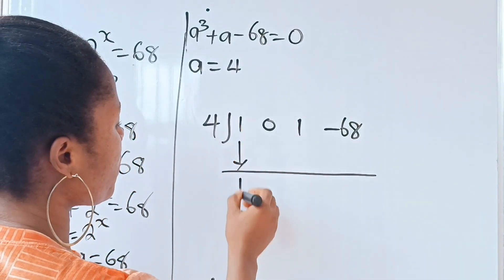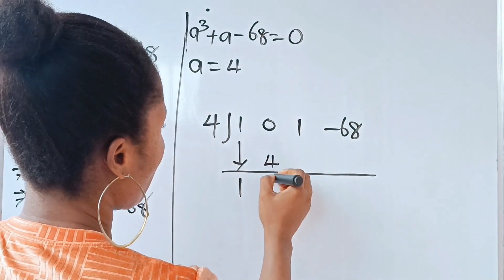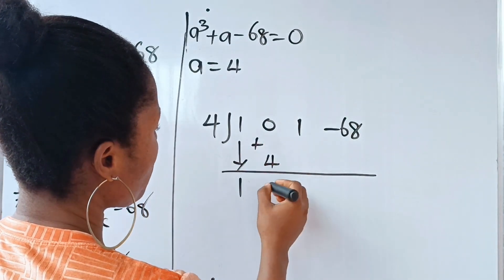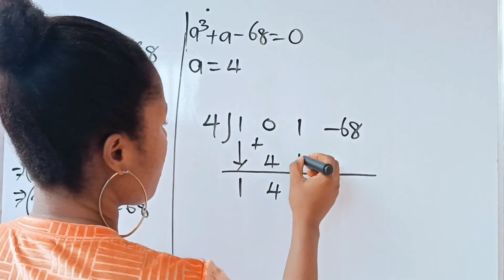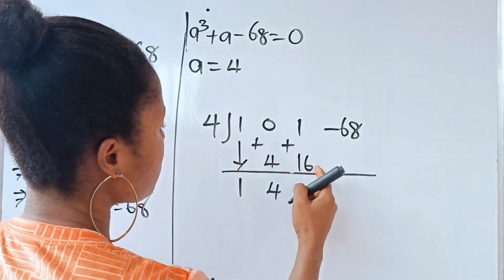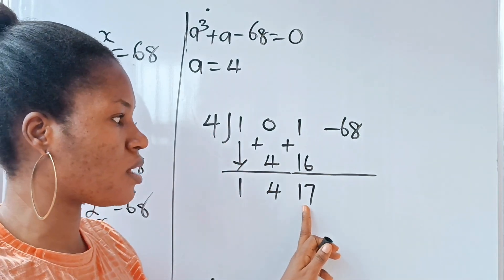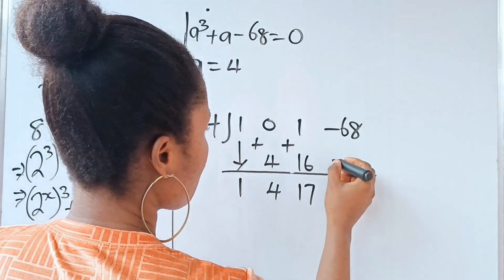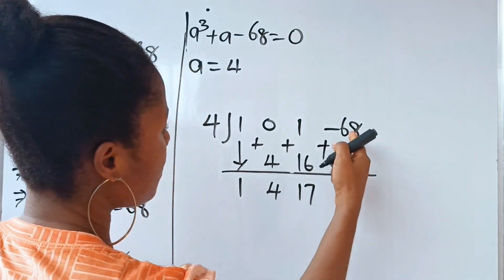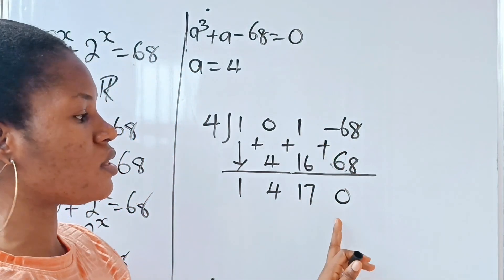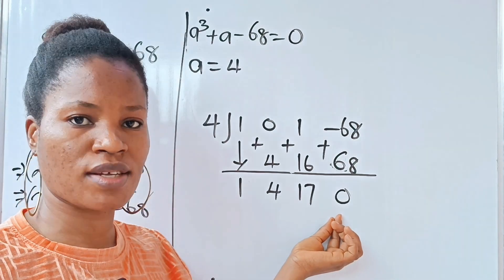We bring down 1. Then 4 times 1 is 4; add to 0, giving 4. Then 4 times 4 is 16; add to 1, giving 17. Then 4 times 17 gives 68; add to −68, giving 0. So the coefficients of our resulting quadratic equation are 1, 4, and 17.